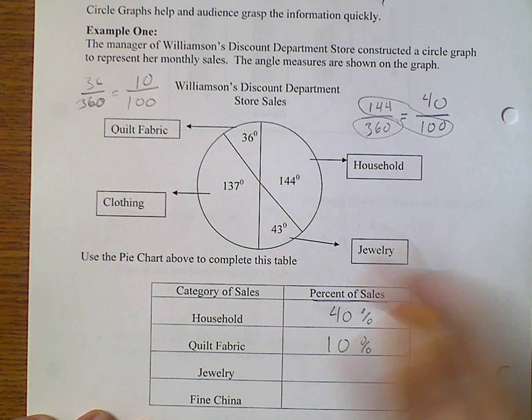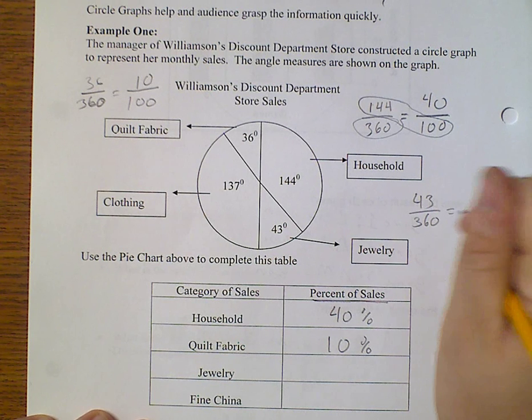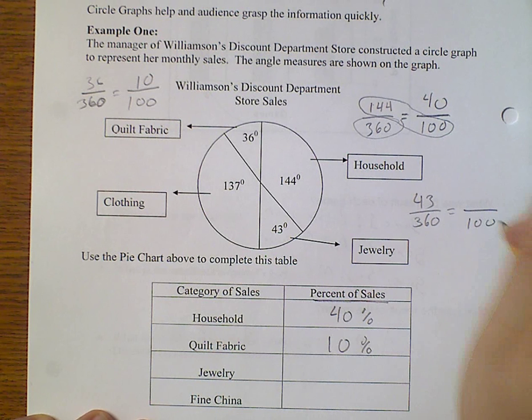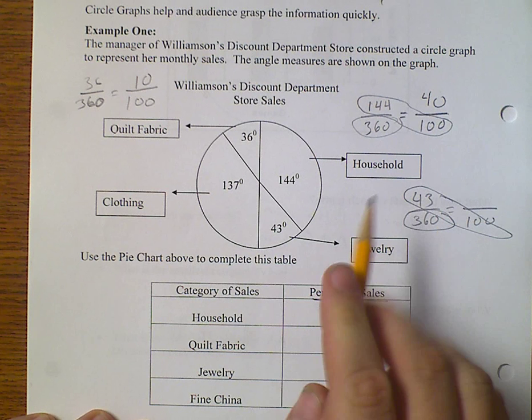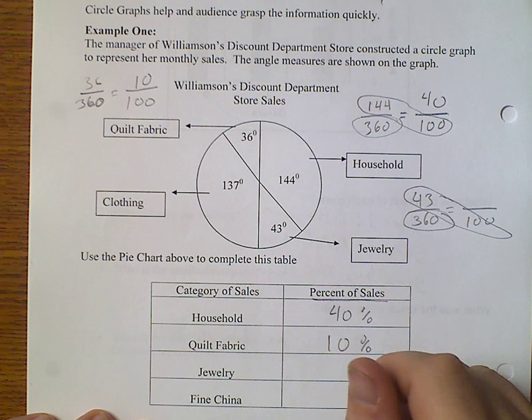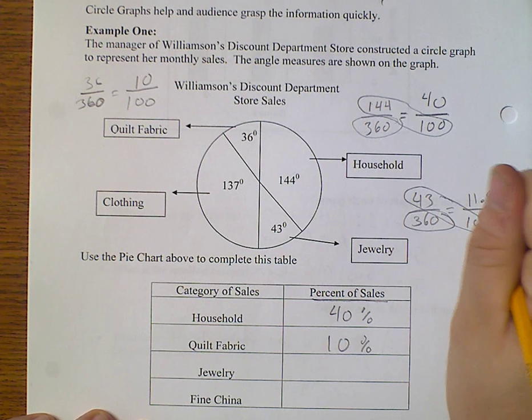Jewelry, that would be 43 over 360 equaling some part over 100. We just cross multiply and divide again. And it gives us 11.94 repeating.